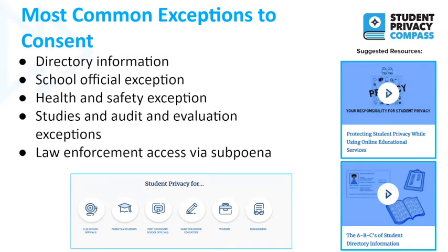Once directory information goes out the door — and schools don't have to give it, they can choose to — anyone can access it, because the nature of a playbill or flyer at a sporting event means you can't collect them all back. They're already out there. So directory information allows parents to opt out. If parents do not want their child's information shared under the directory exception, they can opt out, and there's an annual notice required to inform them of that opportunity.